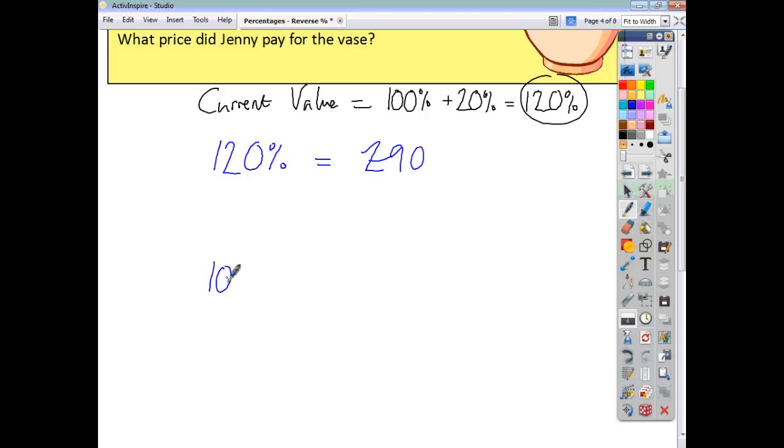We want to find out 100%. We do that by first of all finding 1%. Divide 120 by itself and we find 1%. So 90 divided by 120 is just 0.75, so £0.75. Multiply both sides by 100 and we find that our vase was originally priced at £75.